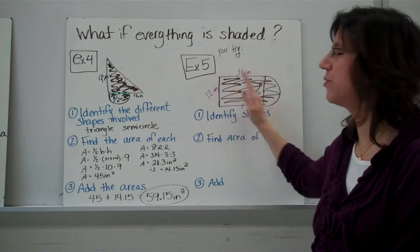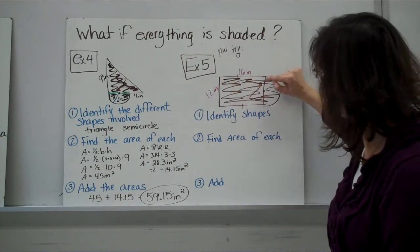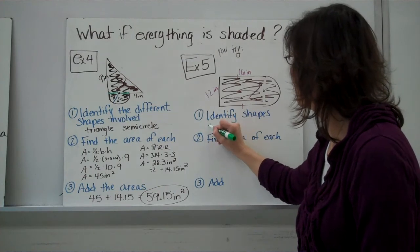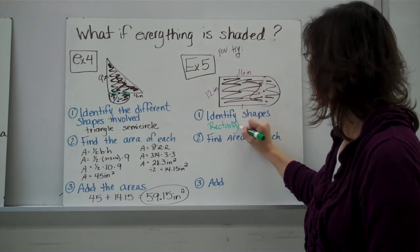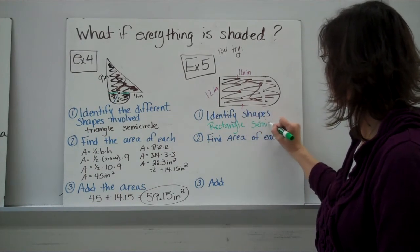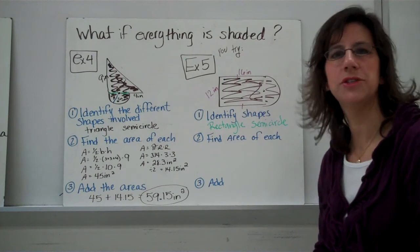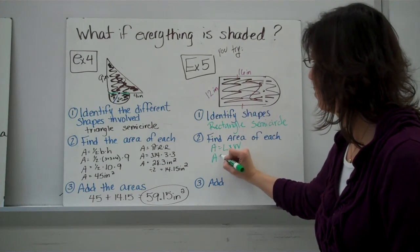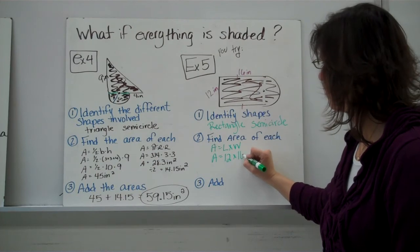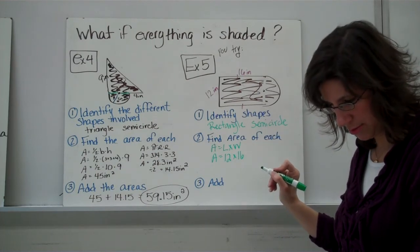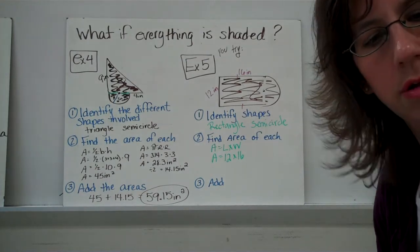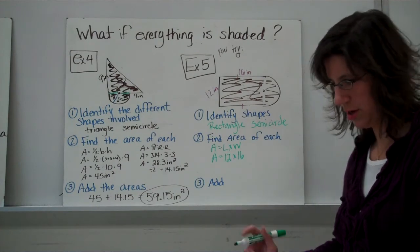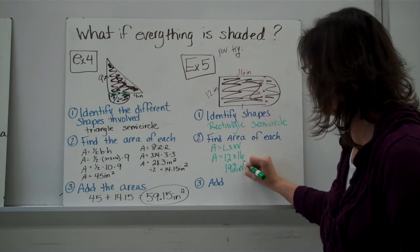This is another popular question where you have a rectangle with a semicircle on the end. And, sometimes, this line isn't even here. So, you really have to recognize that you have a rectangle and a semicircle. Alright? So, you're going to find the area of each part. The area of a rectangle is length times width. So, we've got the length and the width. Let's see. Twelve times sixteen. Twelve times sixteen. One ninety-two. Inches squared, of course.